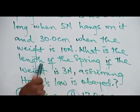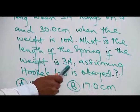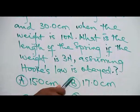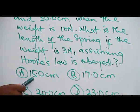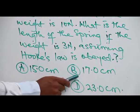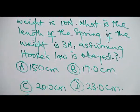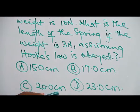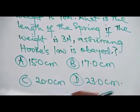What is the length of the spring if the weight is 3 N, assuming Hooke's law is obeyed? Option A: 15.0 cm, B: 17.0 cm, C: 20.0 cm, D: 23.0 cm.